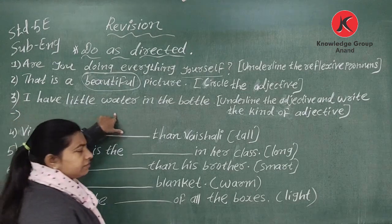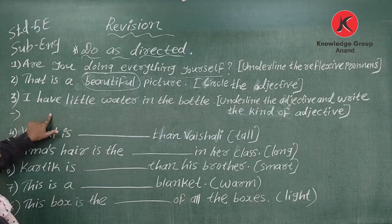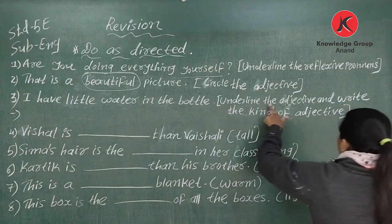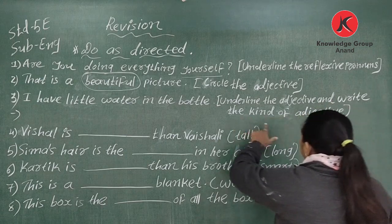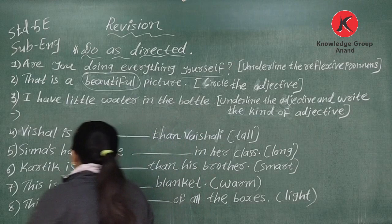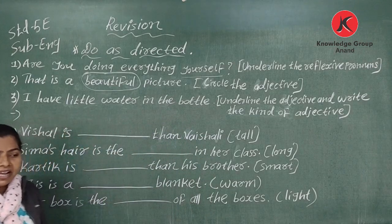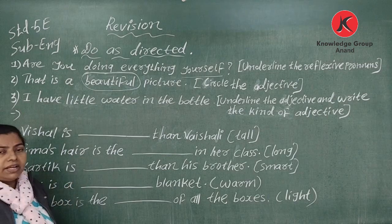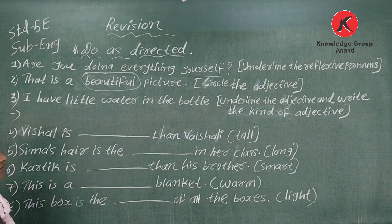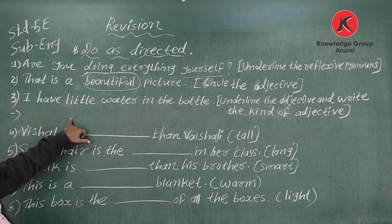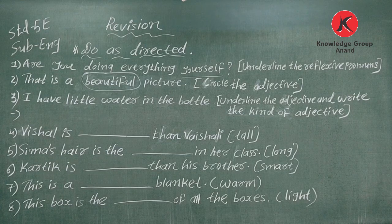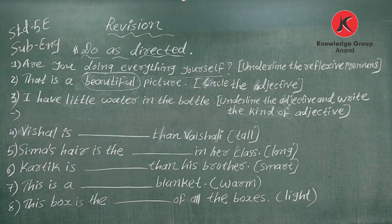Number three: 'I have a little water in the bottle.' Underline the adjective and write the kind of adjective. We have adjectives of demonstrative type, possessive type, adjective of quantity, and adjective of quality. First identify which adjective is in this sentence.